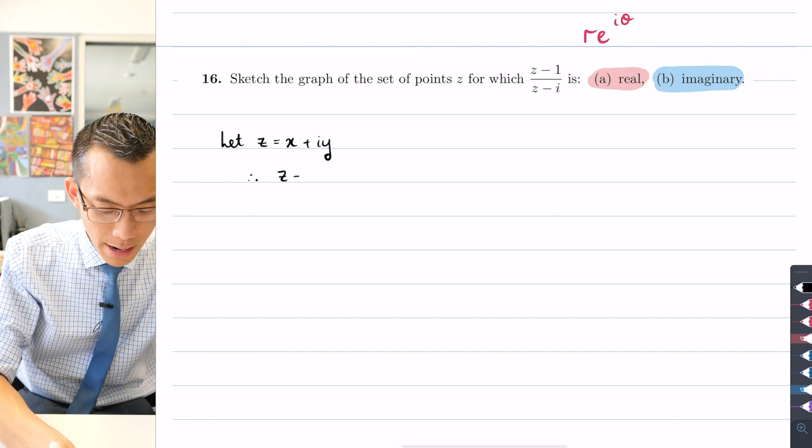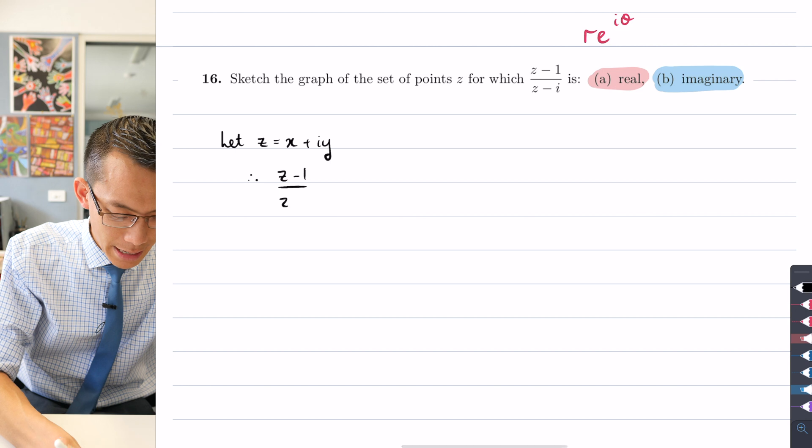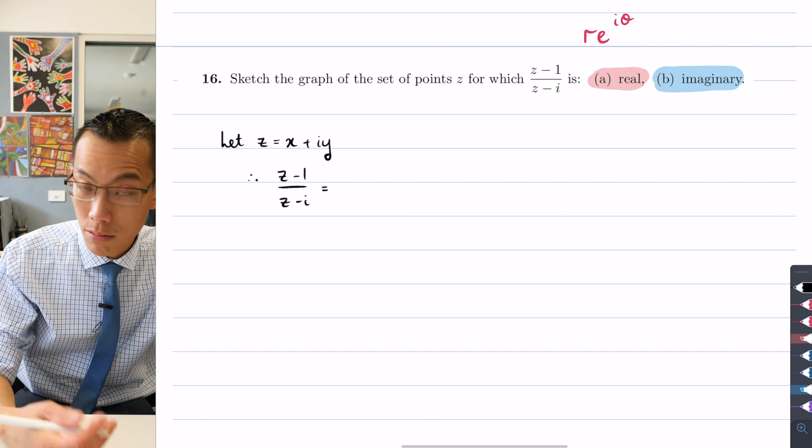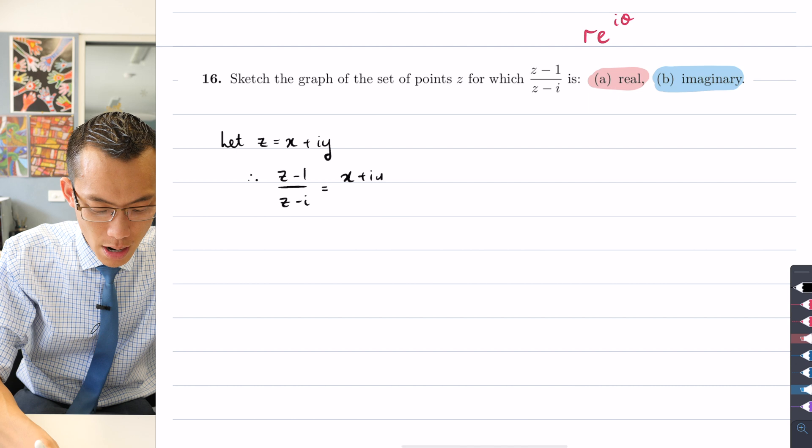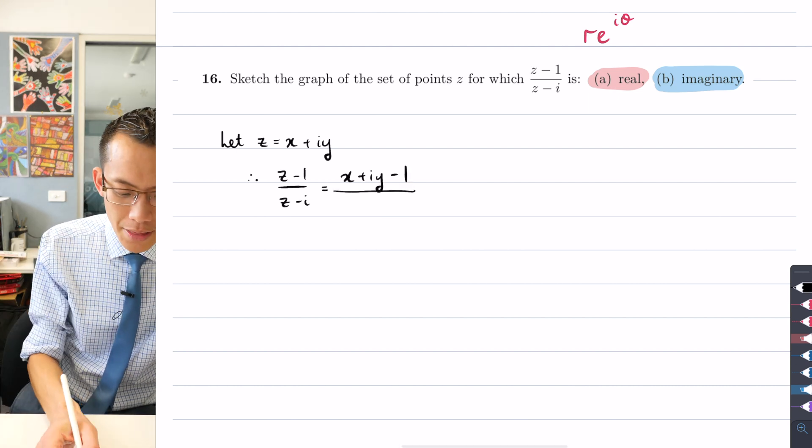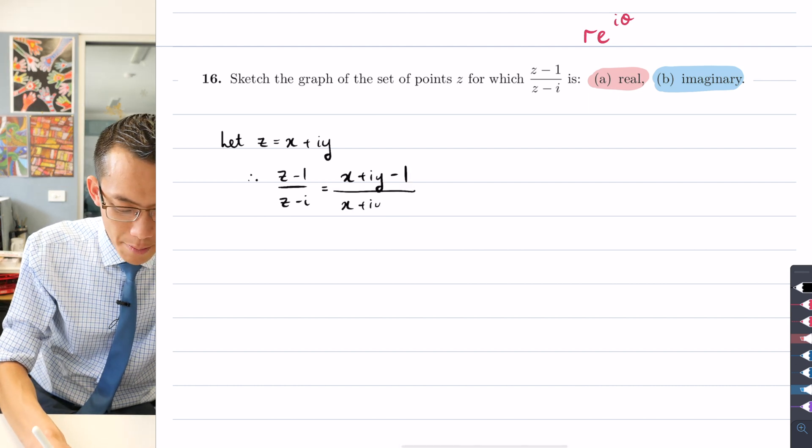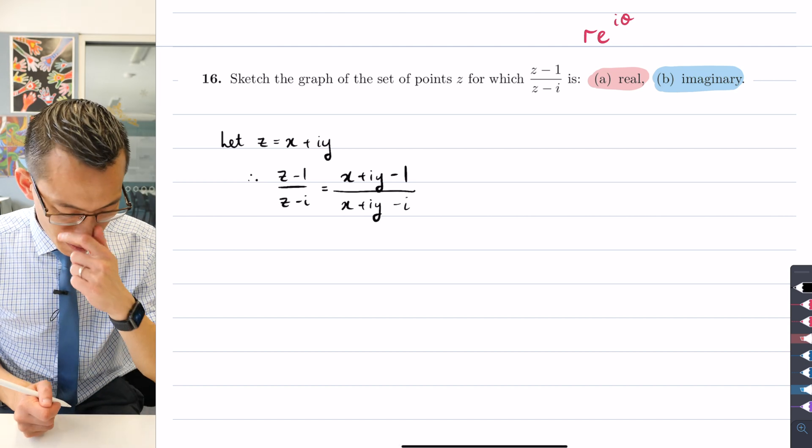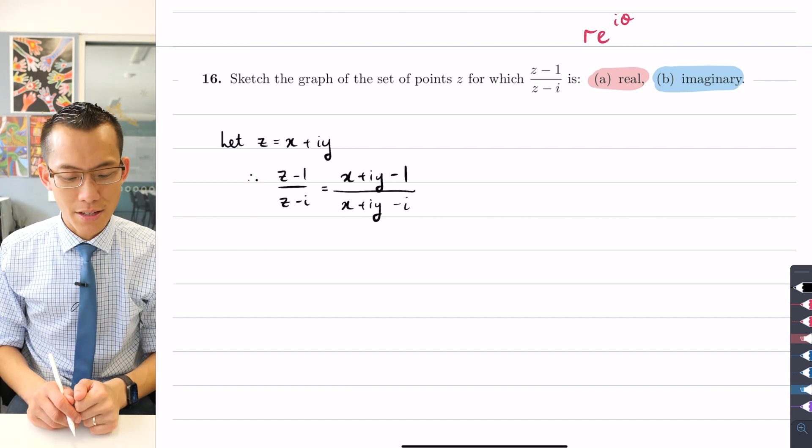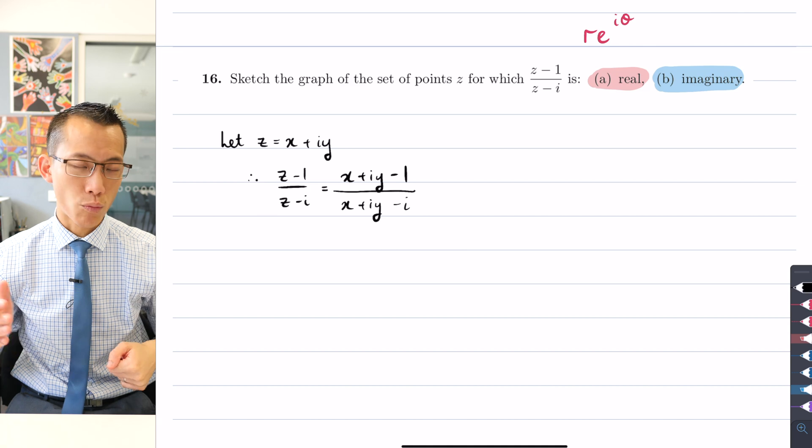So therefore (z minus 1)/(z minus i) is going to be equal to, just going to do a straight substitution first, it's (x + iy - 1) divided by (x + iy - i).